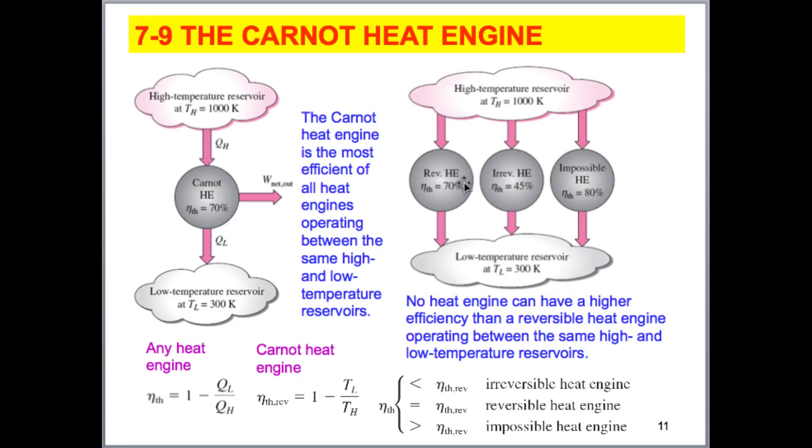So, this Carnot cycle gives us the maximum efficiency we could obtain because it's reversible. We don't have losses. We don't have things that are consuming energy in the system. So, the maximum amount of efficiency we could get in this Carnot cycle is 70%. If you know it's greater than 70%, it's impossible to achieve that. And, in actuality, if the maximum was 70% and we achieve 45%, it's not that bad. 45 out of 70, compared to if we were looking at 45 out of 100.